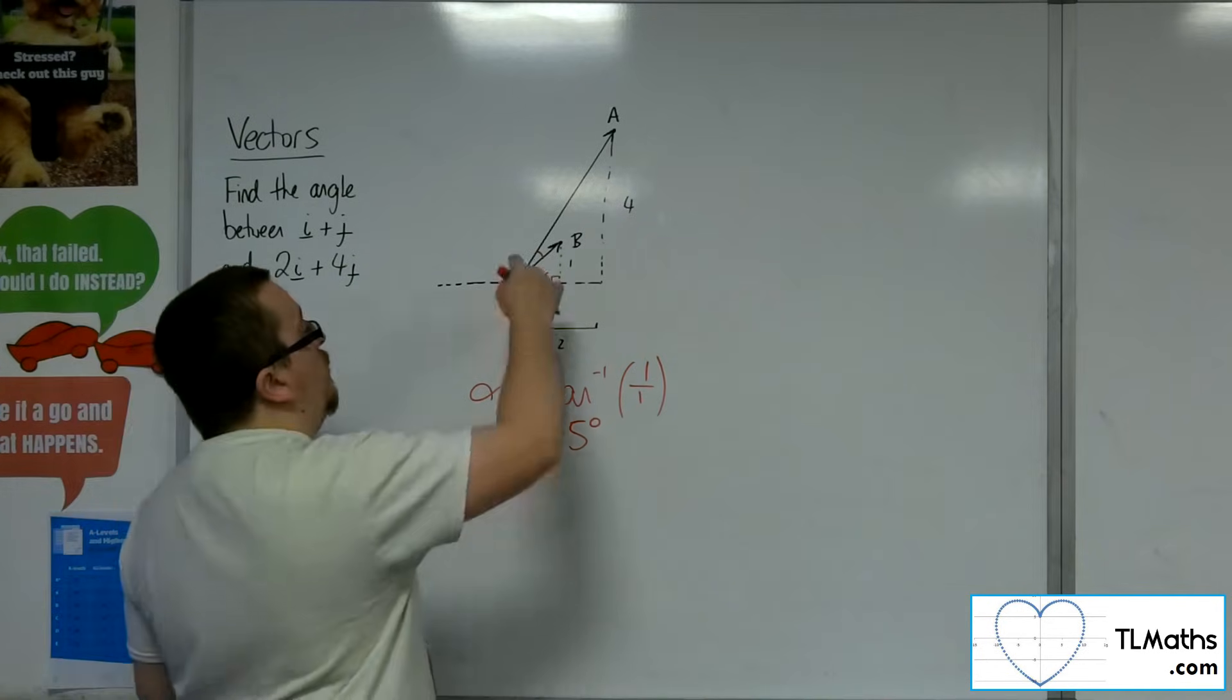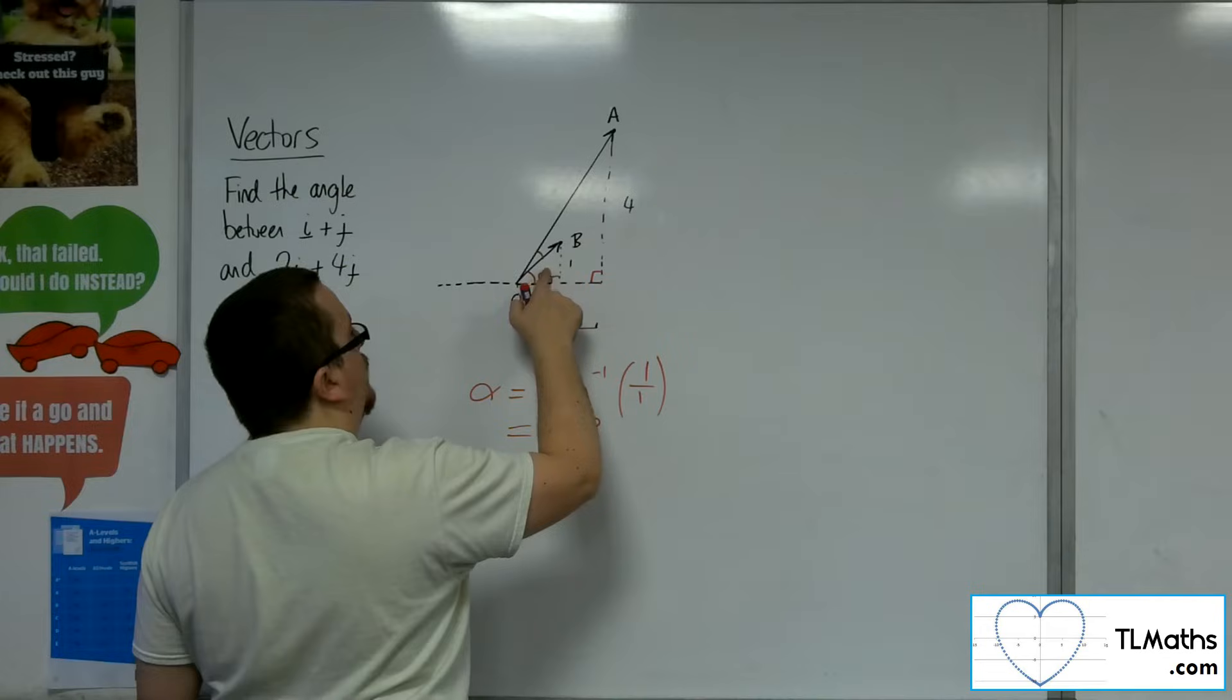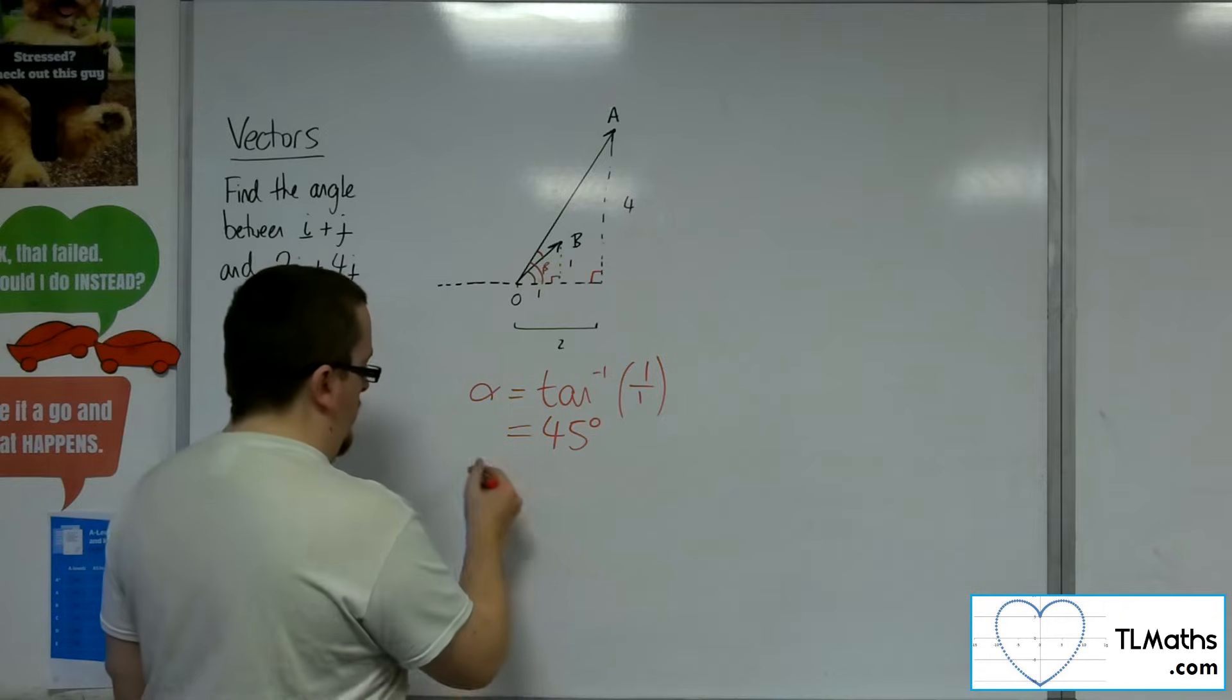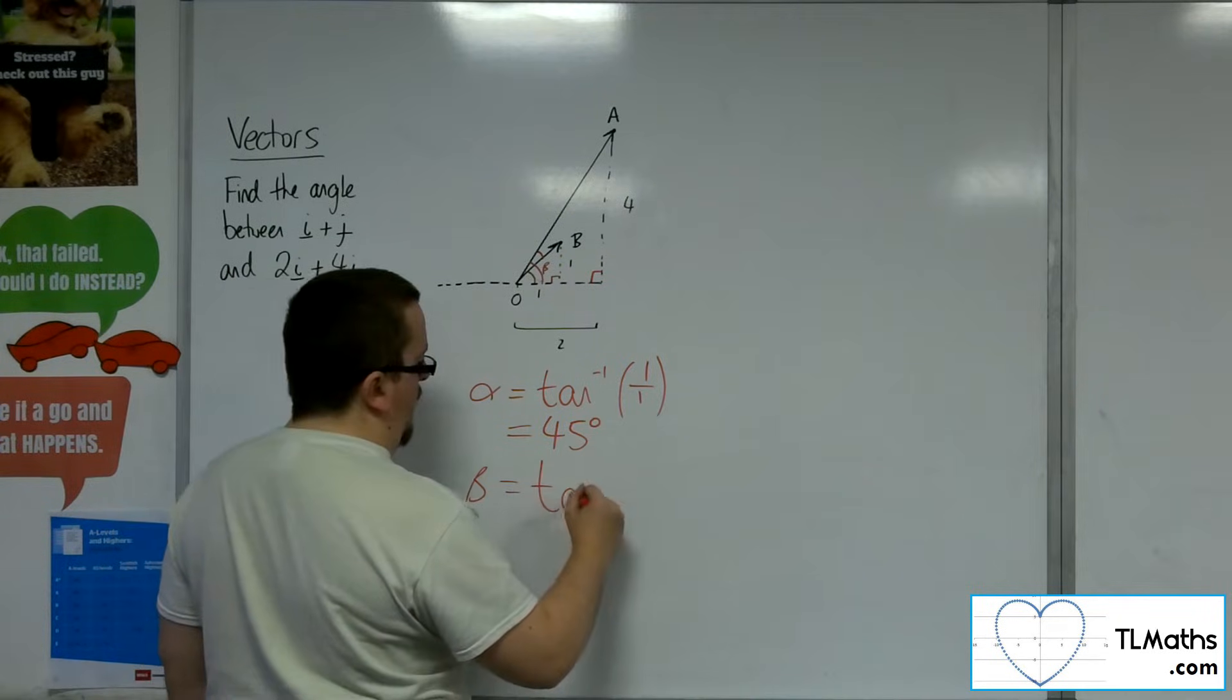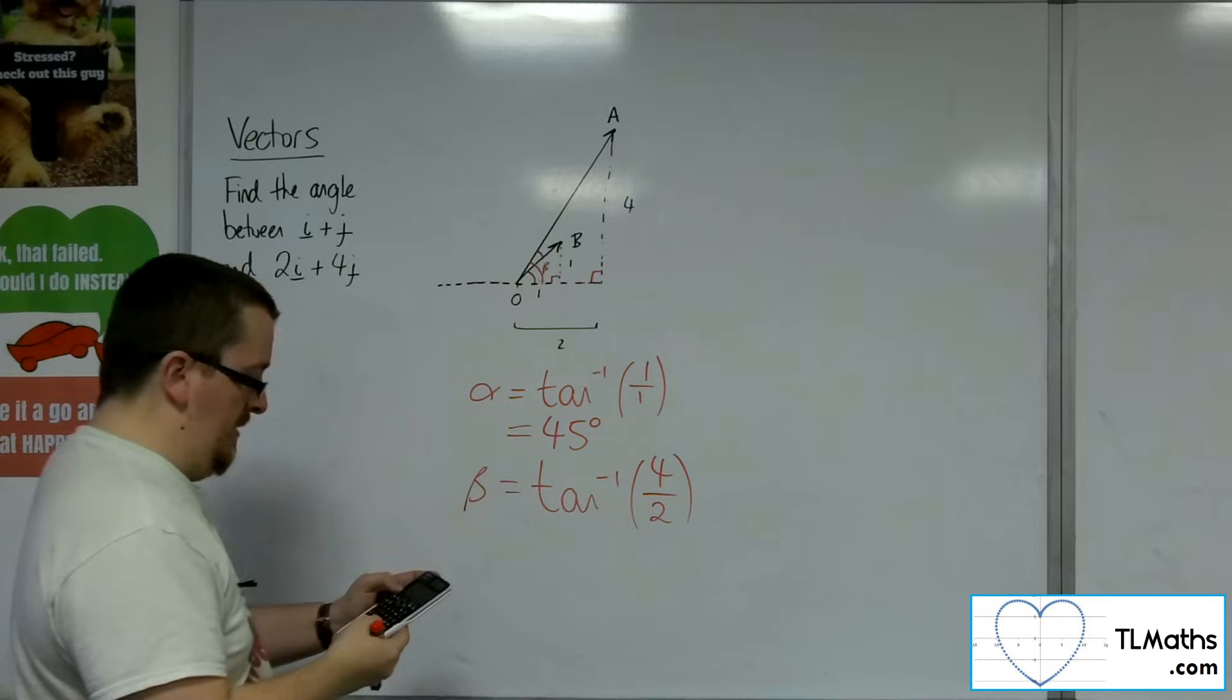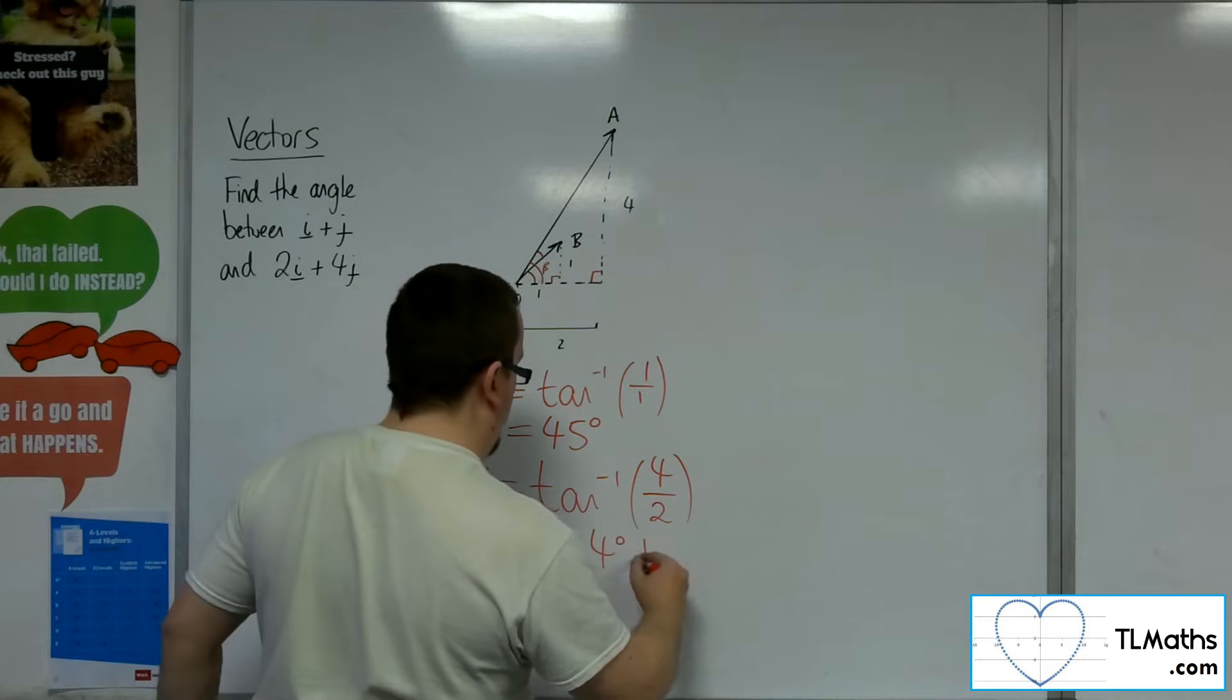So that's the angle for the small triangle. For the larger triangle, let's call that one beta. So let's go back alpha for the moment. That big angle can be beta. So beta is equal to inverse tan of the opposite, so 4, over the adjacent, 2. So inverse tan of 4 over 2 is 63.4 degrees to 3 sig fig.